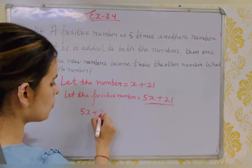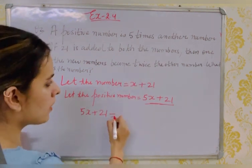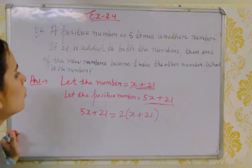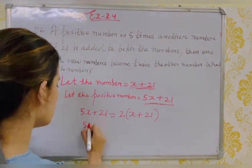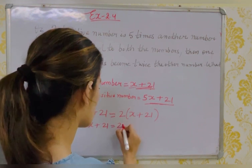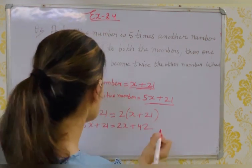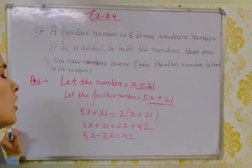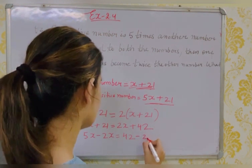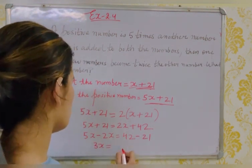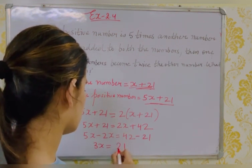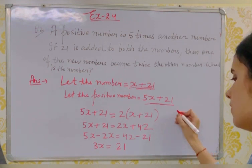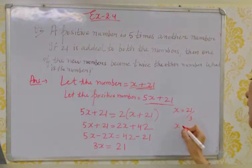Then one of the new numbers becomes twice the other: 5x + 21 = 2(x + 21), which gives 5x + 21 = 2x + 42. Taking variables to one side and constants to the other: 5x − 2x = 42 − 21, so 3x = 21. Therefore x = 21/3 = 7.